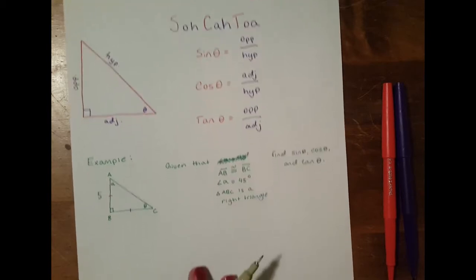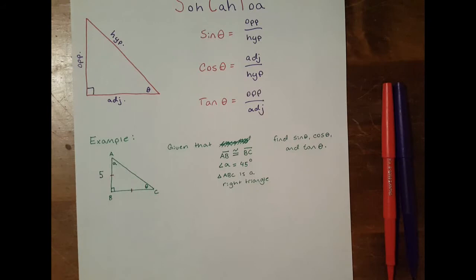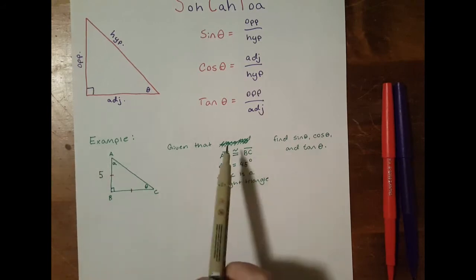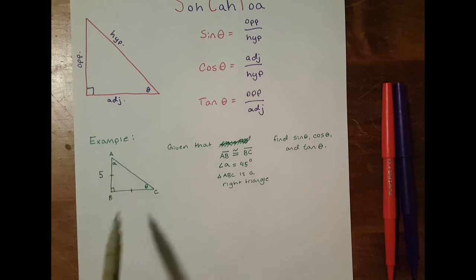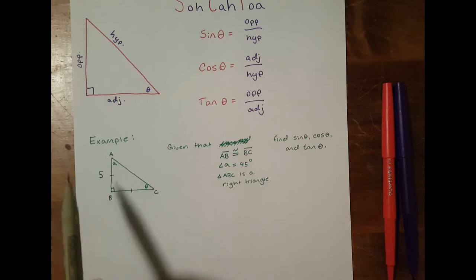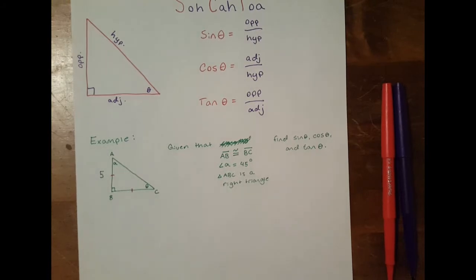So down here I've written up an example. Here we have our triangle, and it says given that side AB is congruent to side BC, the angle A equals 45 degrees, and that triangle ABC is a right triangle, we find sine of theta, cosine of theta, and tangent of theta.